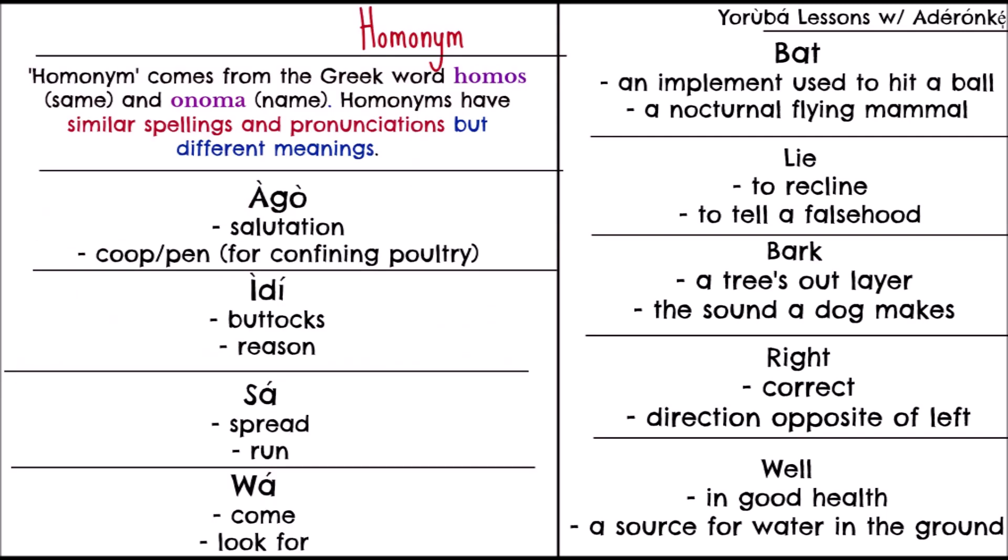I'll give you examples. I have already treated some, like 'edi,' and the varying meanings it could have apart from buttocks and raisin. I've done 'pa' — that's another homonym. It could be to kill, to turn off, to extinguish, to execute, or used in the context of a line. I've done pa, and I'll be doing more in the near future.